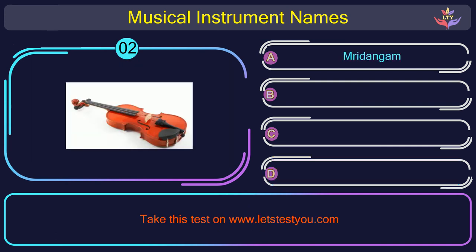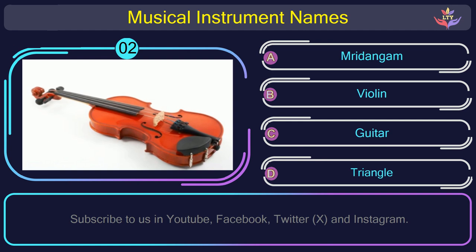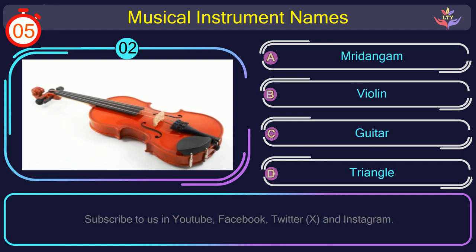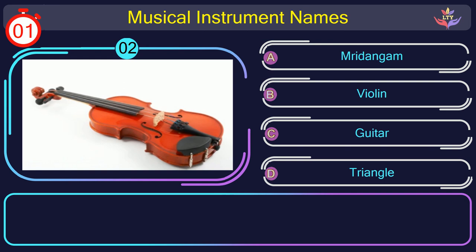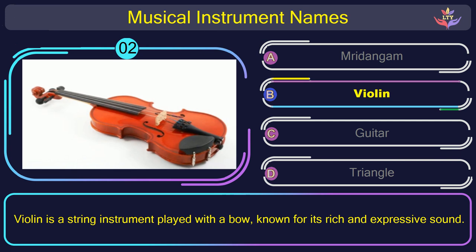Question number 2. Guess the name of the musical instrument in this picture. The correct answer is option B: Violin. Violin is a string instrument played with a bow, known for its rich and expressive sound.